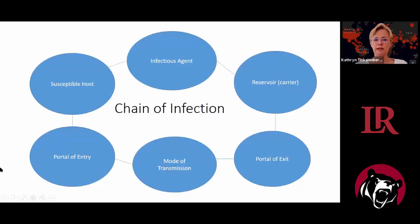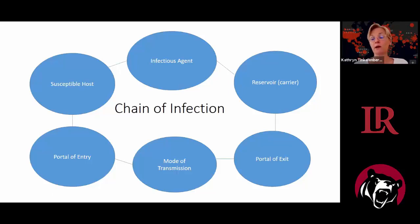Let's talk about the chain of infection. When we talk about how to stop a disease, we talk about breaking the chain of infection. The chain involves an infectious agent — usually a virus or bacteria. The reservoir is like the carrier, where the infectious agent takes hold; it can be water or soil, but for communicable diseases it's usually a person, though the very first case may come from an animal. For example, swine flu originates in pigs.